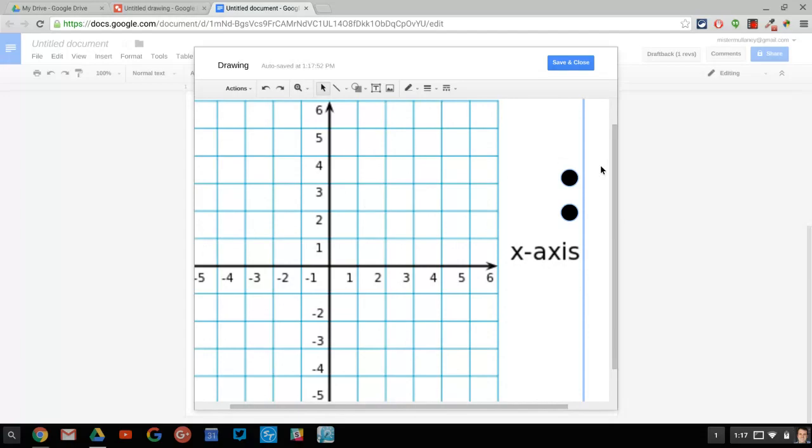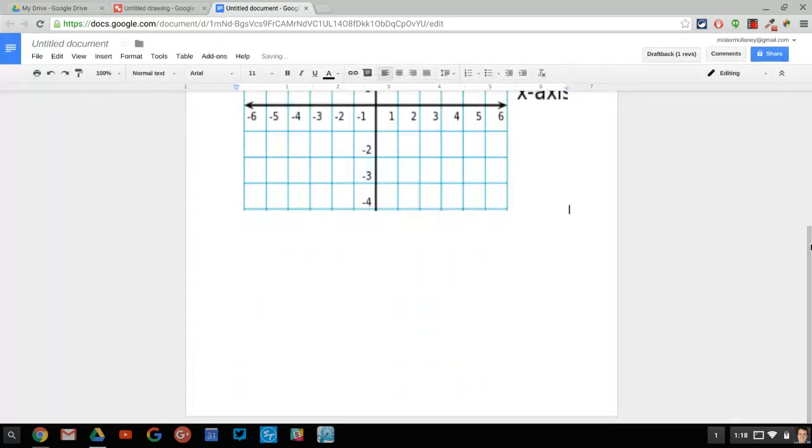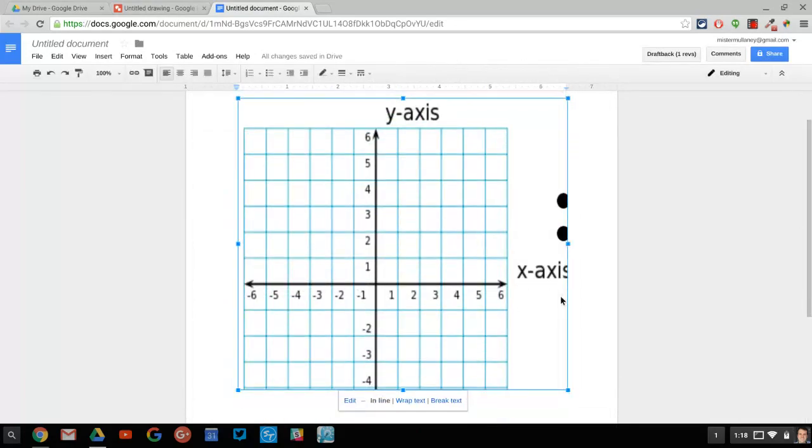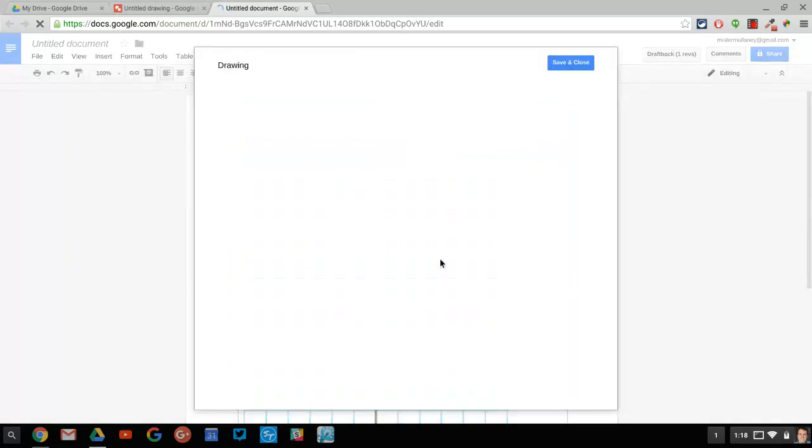And above that, I could put some instructions, hey, graph this line, draw this square, this rectangle, whatever it might be. So I click Save, and now it's on the file. And again, I could put instructions, I can resize, I can do all kinds of things, and the kids can go in and just right-double-click on it and edit it. So I could just have a Google Doc file with a number of those and then instructions.